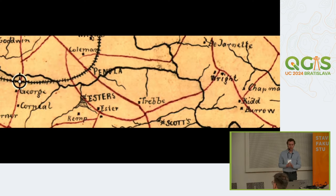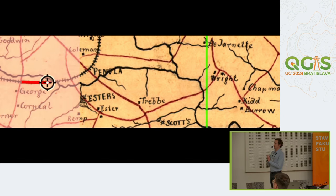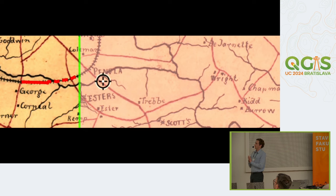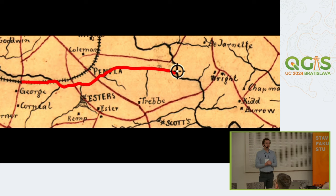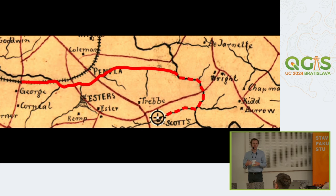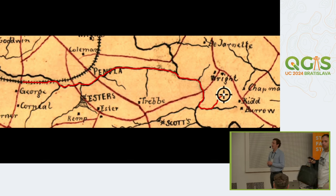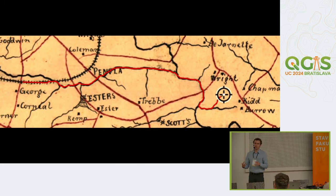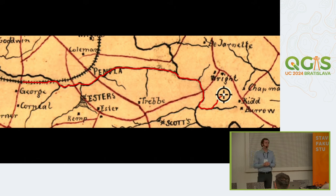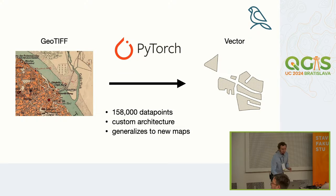So this is the AI model that we first created — this is an AI vectorizer. What you're seeing on the screen is basically: we take as input the prior vector lines that you've digitized, and then based on the rasters that you have loaded in QGIS, we predict all the future trajectories that could happen digitizing based on that context. This is done entirely within QGIS — you can go to the plugin manager and add this plugin.